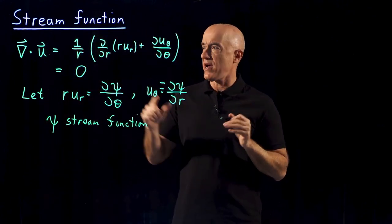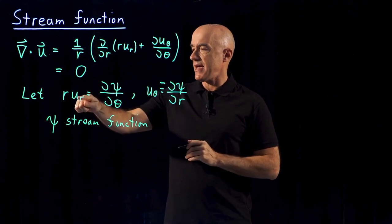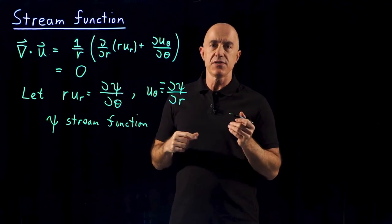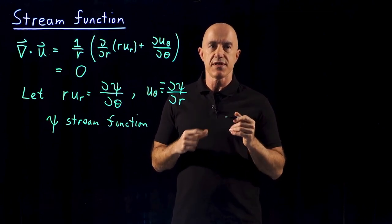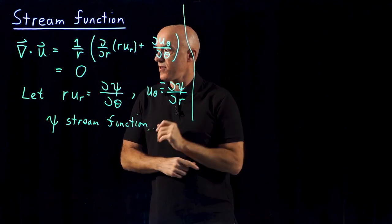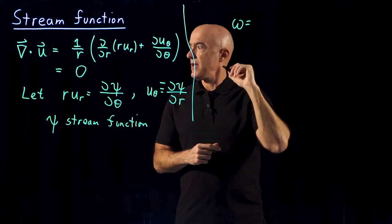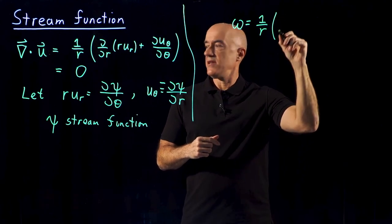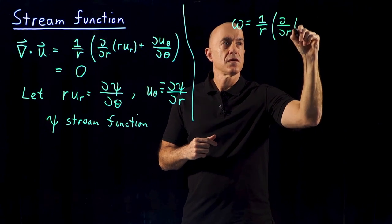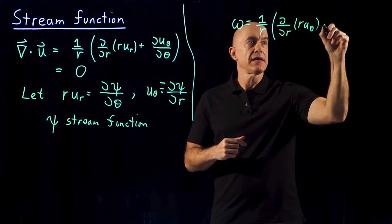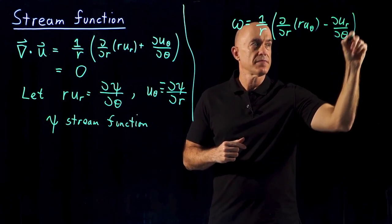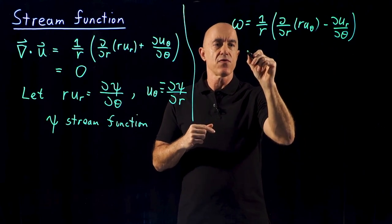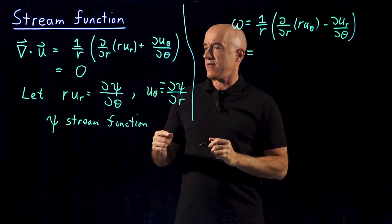So now the continuity equation is satisfied, and we can eliminate the two components of the velocity field by the derivatives of the stream function. What we still need to do is determine a relationship between the scalar vorticity and the stream function. The scalar vorticity ω in polar coordinates is 1 over r times d/dr of r·u_θ, minus du_r/dθ. Now we want to replace u_θ and u_r by the stream function.